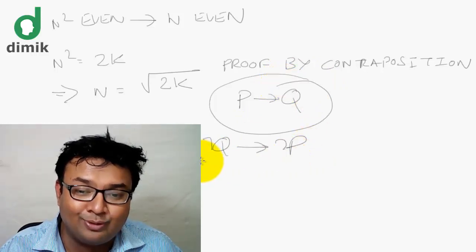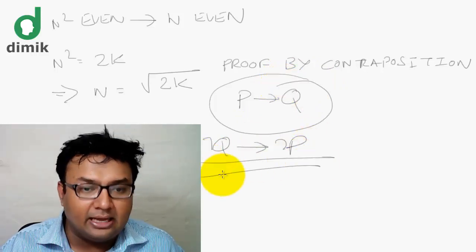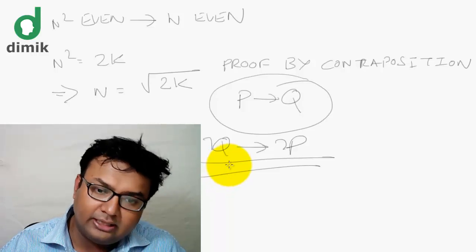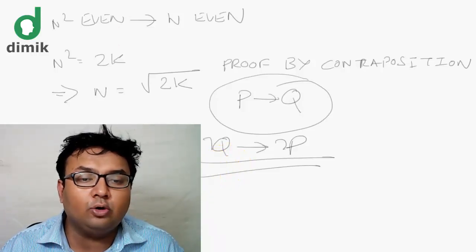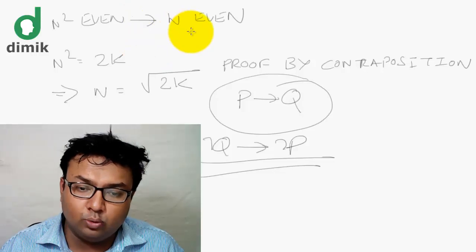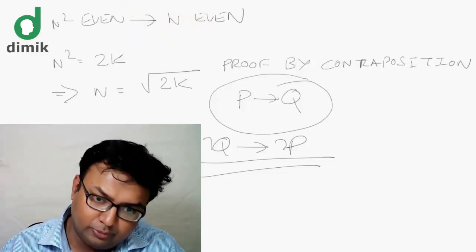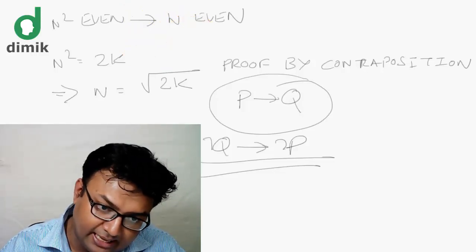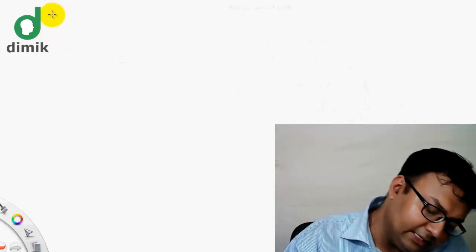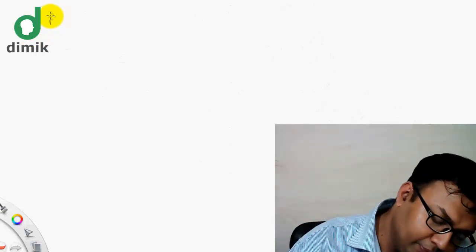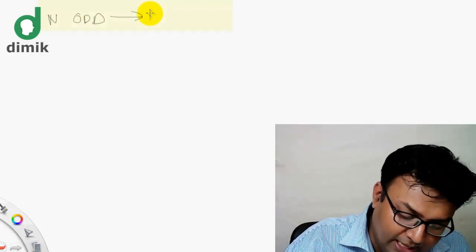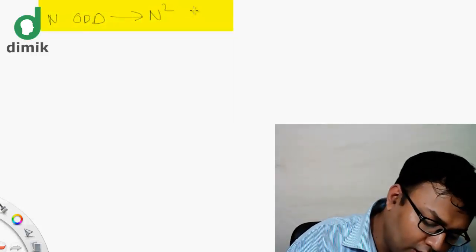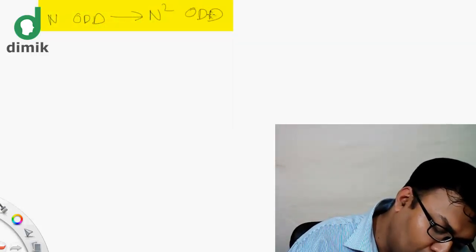Let's take a look at the original statement. The original statement is: n squared even implies n even. We have to write the contrapositive. The contrapositive is: not even implies not even, meaning if n is not even — if n is odd — then n squared is odd.